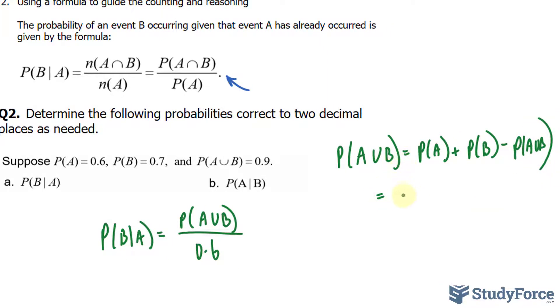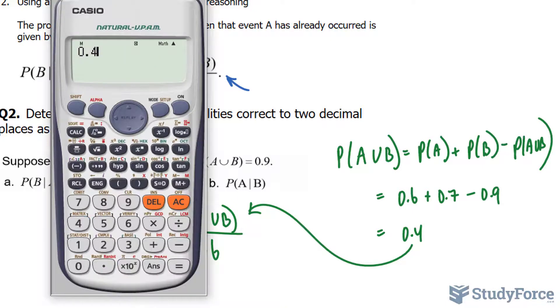So the probability of A was 0.6 plus 0.7 minus 0.9. Those two become 1.3 minus 0.9, which is 0.4. 0.4 divided by 0.6 is 2 over 3.